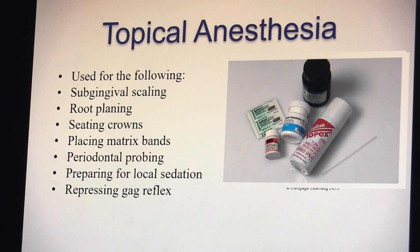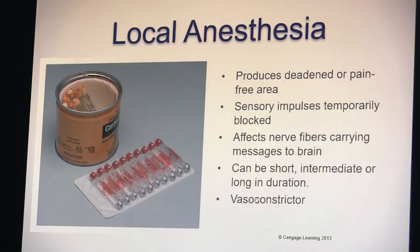Topical anesthesia is used for sub-gingival scaling, seating crowns, placing matrix bands, periodontal probing, preparing for local sedation, and suppressing a gag reflex. For impressions on patients with a strong gag reflex, a cetacaine spray applied to the back of the throat numbs the area and usually relieves the reflex. In class we will also show where to place topical for upper and lower teeth.